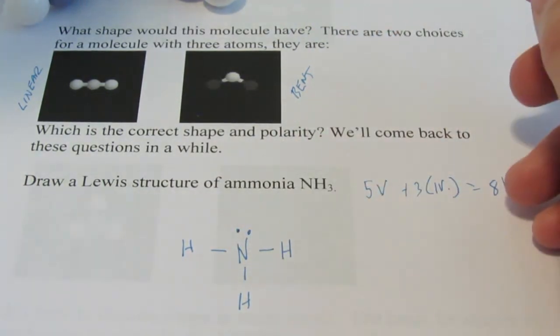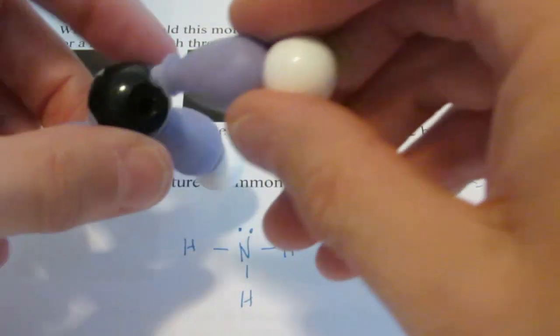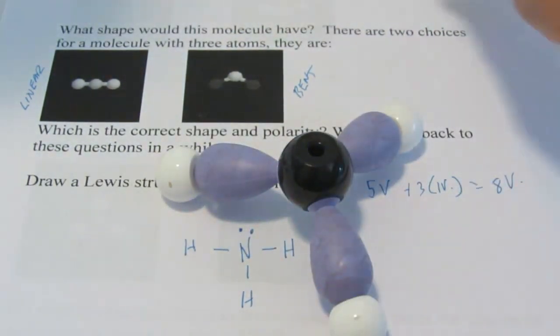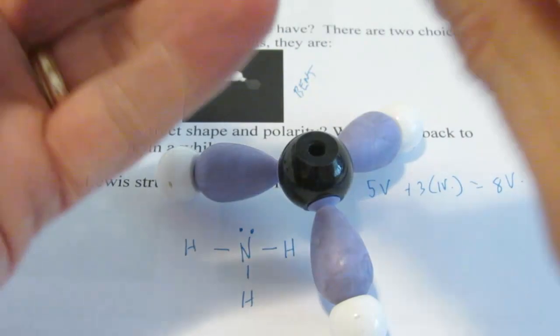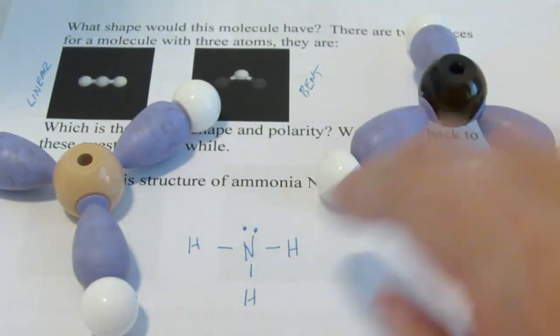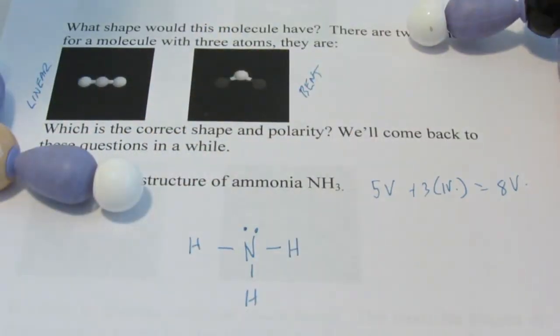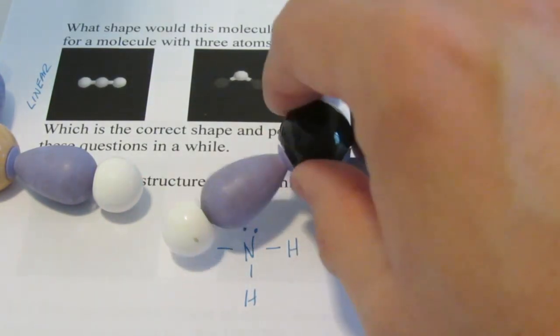Now, what shape do you think that would have? Well, we have a couple of choices again. We could end up with what we call a trigonal pyramid. It would look something like this. Or we might have what we call a planar arrangement, a trigonal planar, which would look like this. See, we have three bonding hydrogens to that nitrogen. So, we could have that structure right there, which we would call trigonal planar. Or we have this structure right here. You can see that the nitrogen in the center is lifted up off the paper.